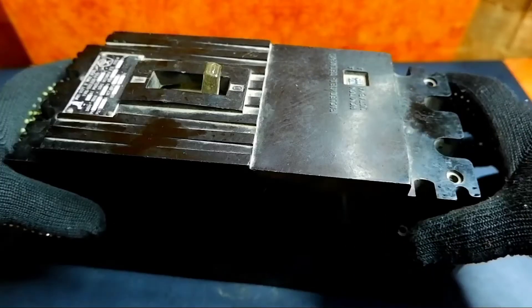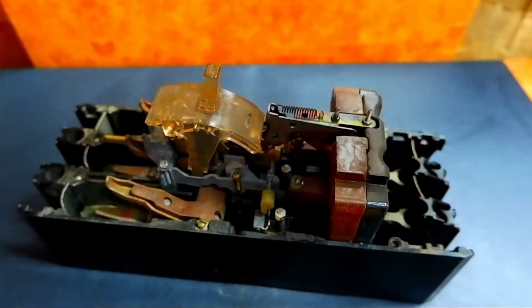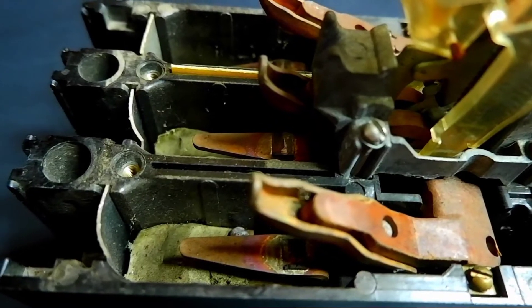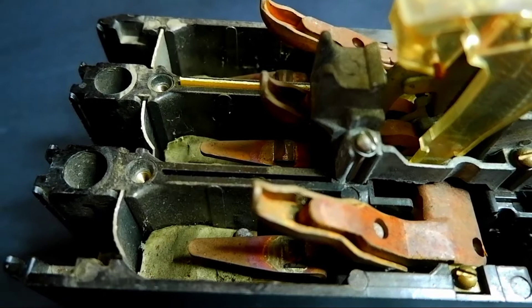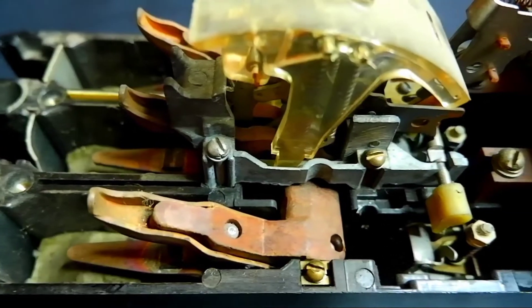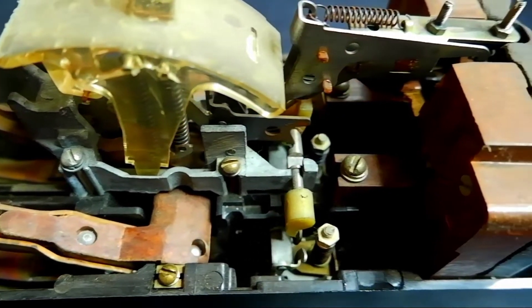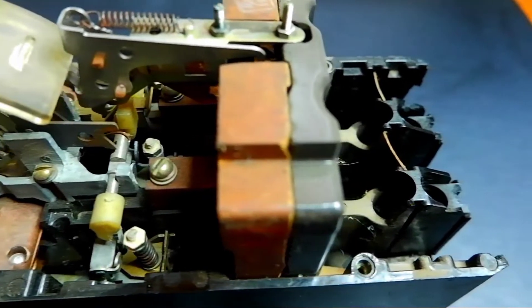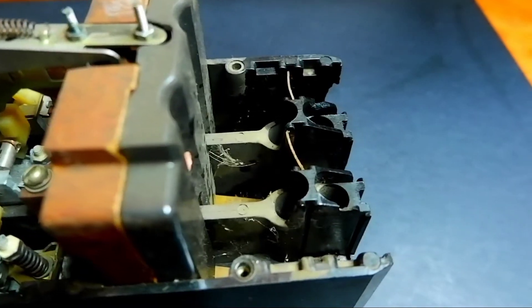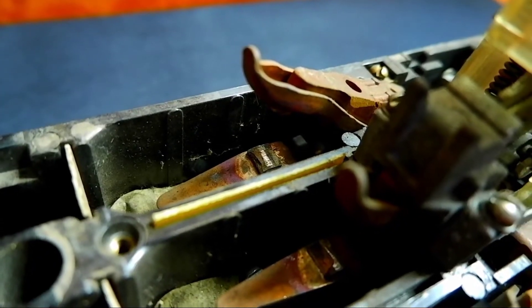Let's see what is hidden under the cover. Here I immediately see the silver contacts. Unfortunately one of them is almost completely erased, but the rest seem to be intact, and of course there is copper. Now I am unscrewing all the bolts and try to get everything valuable from there.